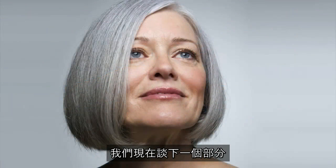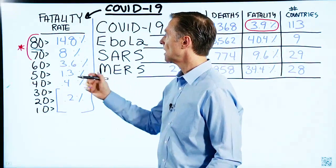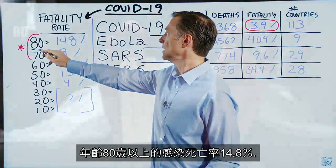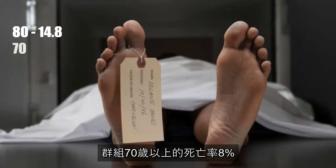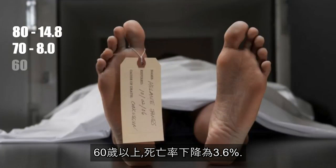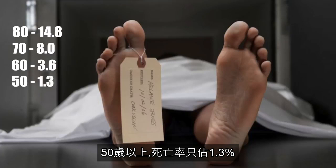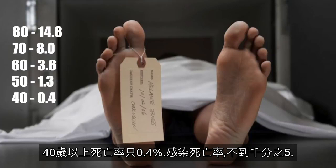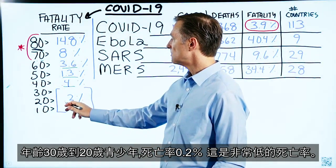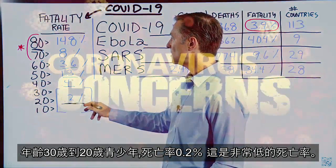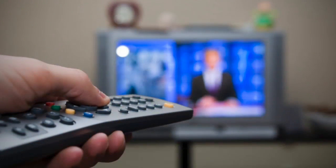Let's touch on age and the fatality rate of the coronavirus. In the 80s-and-older age group, the death rate is 14.8%. Age 70 and older: 8%. In your 60s it comes down to 3.6%, 50s it's 1.3%, 40s it's 0.4% — less than half a percent chance of dying once infected. In your 30s, 20s, or teens, it's 0.2%. This is extremely low. If you read the news, they make it sound like everyone's going to die, but that's not true.